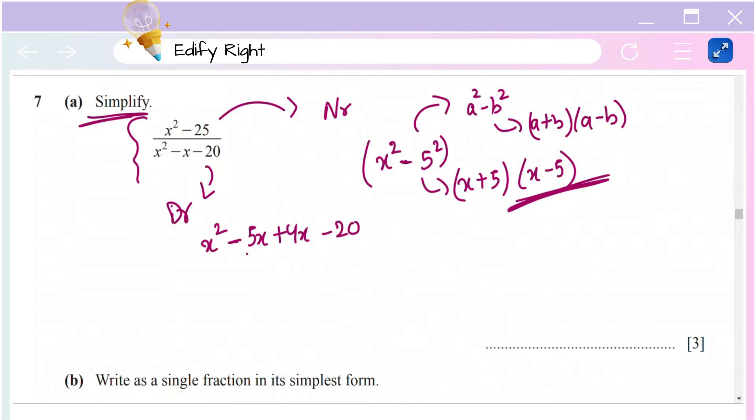Now pay attention to the numbers I'm choosing: -5 and +4. Why am I doing that? Because those are the factors of -20. We want to split the middle term by using the factors of the last term. So I'm using the factors of -20 to split -x.